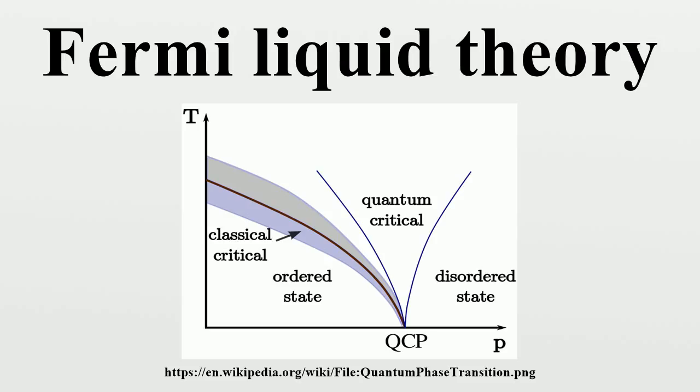Optical response: Fermi liquid theory predicts that the scattering rate, which governs the optical response of metals, not only depends quadratically on temperature, but it also depends quadratically on frequency. This is in contrast to the Drude prediction for non-interacting metallic electrons, where the scattering rate is a constant as a function of frequency.